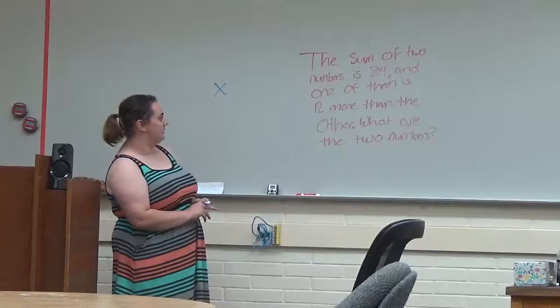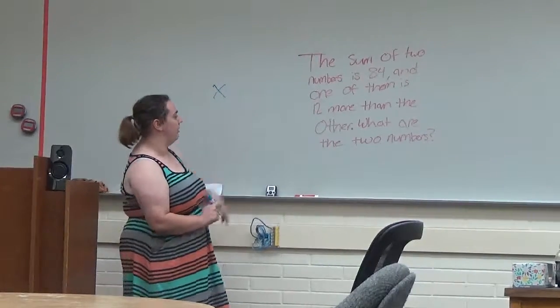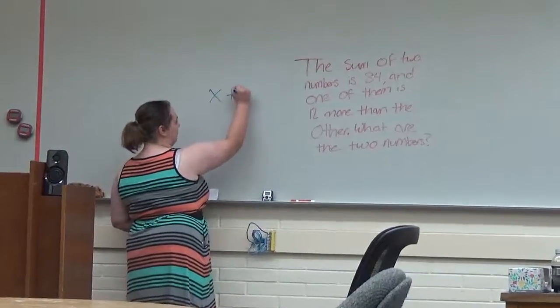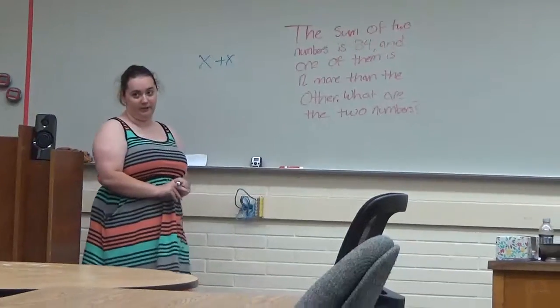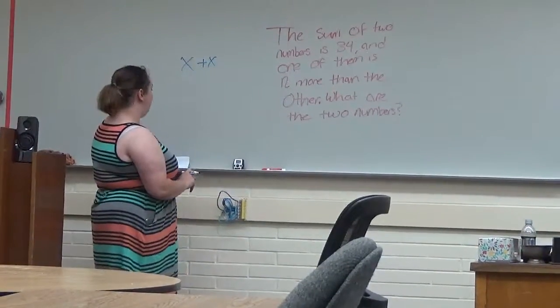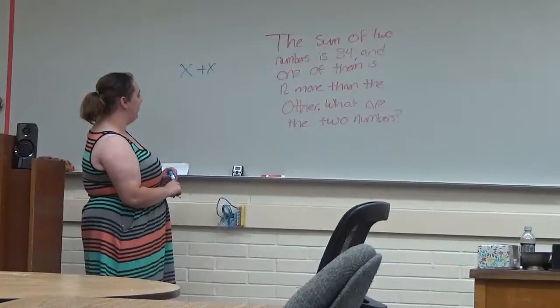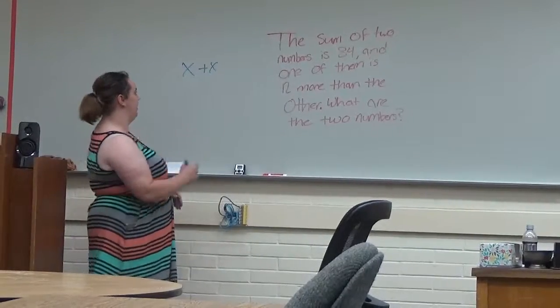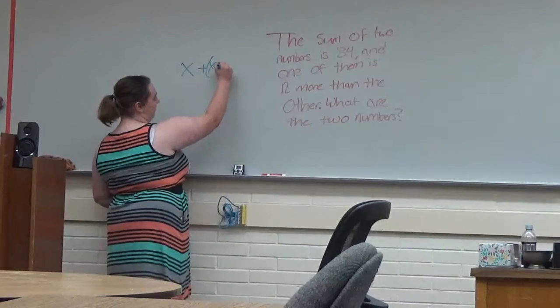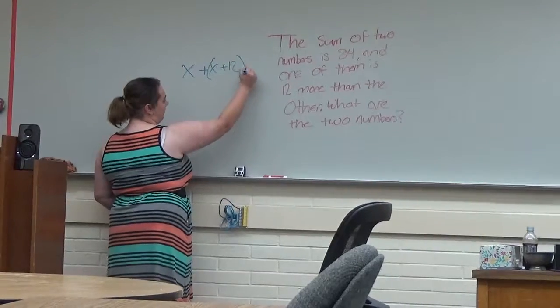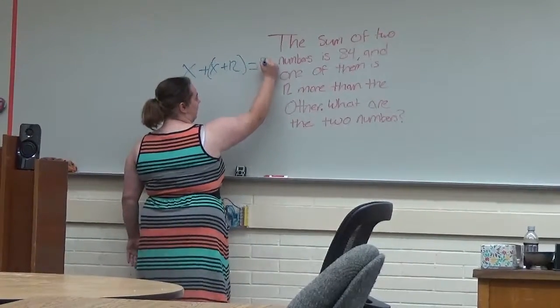So it says there's two numbers. So you have x plus x and it says sum, which means you have to use addition. And one of them is 12 more than the other, so I just group one. And then you know that equals 84.